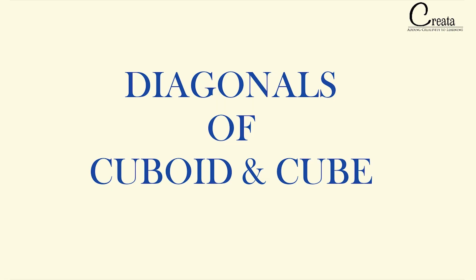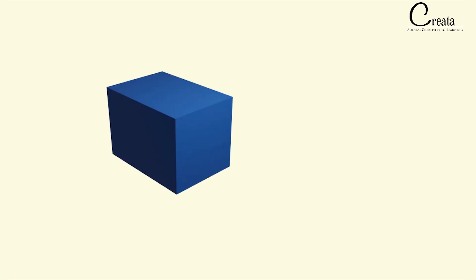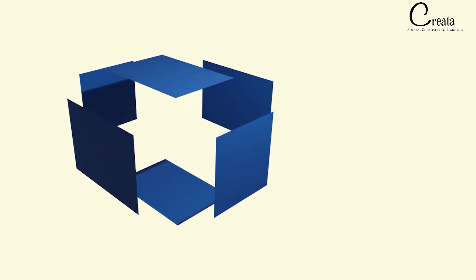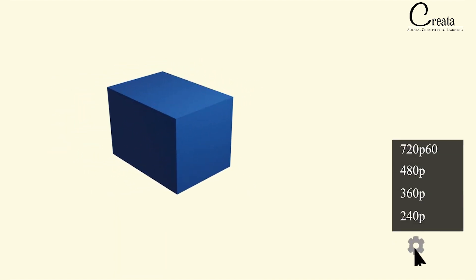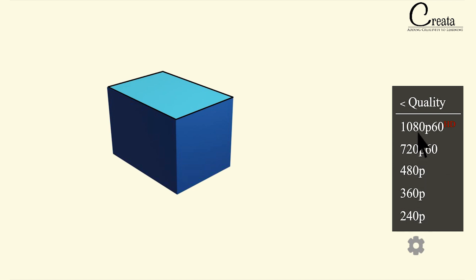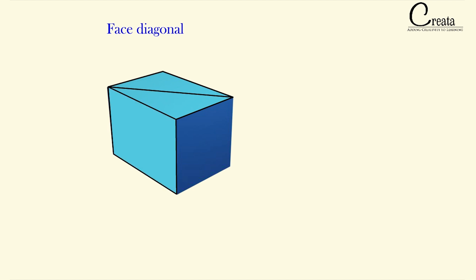Firstly we will see the concept of face diagonal. The cuboid has six faces. The face diagonal is the diagonal of a face of the cuboid. If we take this face, which is a rectangle, the diagonal of this face is known as the face diagonal. Each face can have its own diagonal.